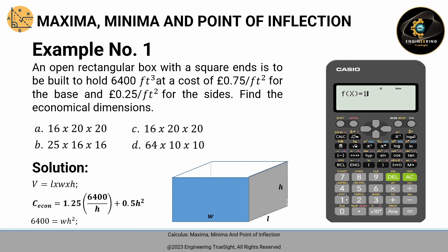just like this one: 1.25 times the quantity 6,400 over H, or use it as alpha X to designate as a variable, plus 0.5.